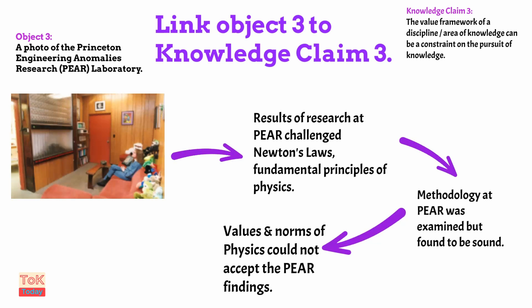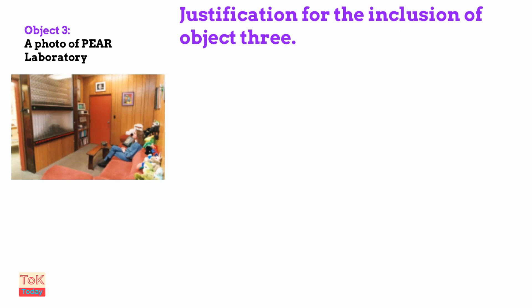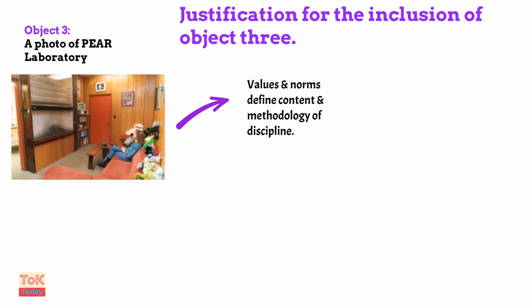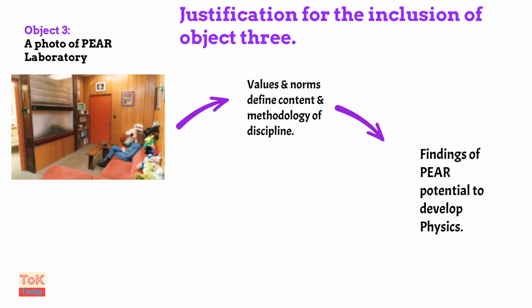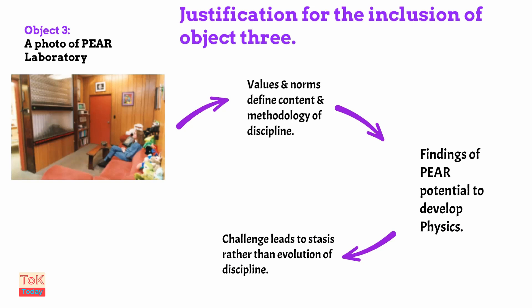Finally, we'll justify the inclusion of object three. The values and norms of a discipline define the content and methodology of that discipline. Therefore, if something like PEAR challenges that discipline, what you have is a constraint on the evolution of the discipline — and this can lead to stasis in knowledge development in that particular discipline. Stasis is a product of the constraints on the pursuit of knowledge.